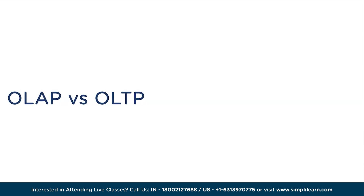OLTP is designed to handle real-time transactional processing, ensuring the integrity and consistency of daily operational activities. By adopting a normalized data model, OLTP optimizes the storage and retrieval of individual records in high-speed environments. Its primary objective revolves around efficient data modification, such as inserting, updating, and deleting records, to support concurrent transactional operations with a focus on rapid response times and maintaining data accuracy at the record level. OLTP caters to the needs of time-sensitive business operations.